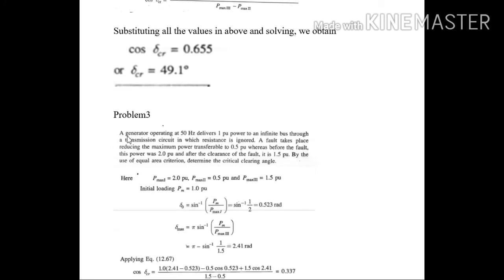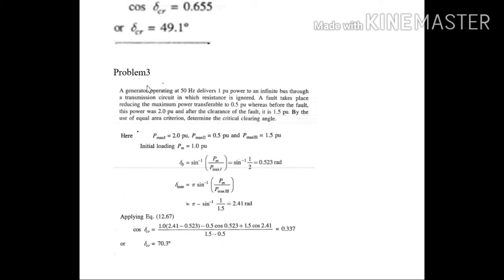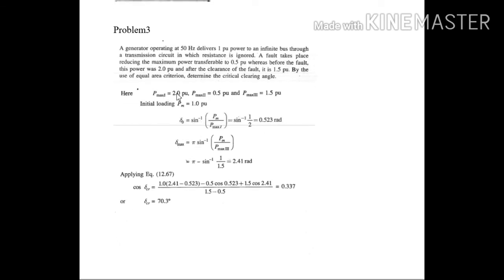Then coming to the last problem, problem number 3. You can easily read here. Now all the values are given here: Pmax1, Pmax2, Pmax3. Just substitute all the values in the critical clearing angle expression, and you will obtain the value as delta CR equals 70 degrees.